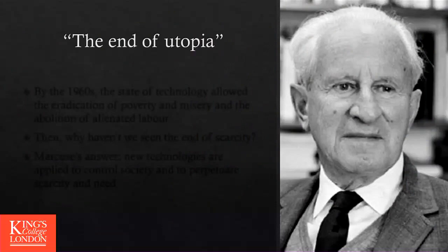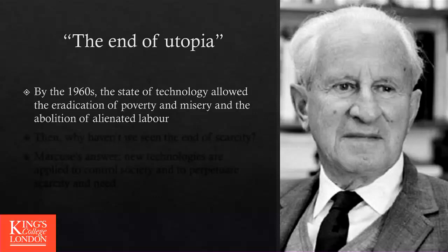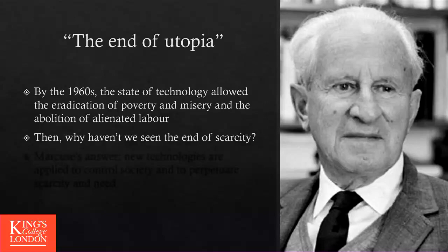Going back to Marcuse, in his other interesting book The End of Utopia, he wonders: in the 1960s and especially by the end of that decade, he said we now have at our disposal all the technological means to abolish hunger, misery, poverty, and even alienating labor — maybe not quite then, but clearly now. So the question is: why is it that we haven't seen the end of scarcity? Why are we not living in utopia right now?